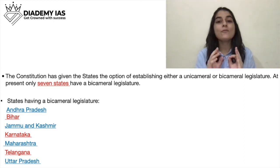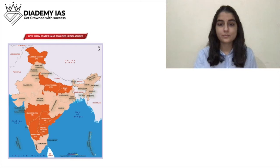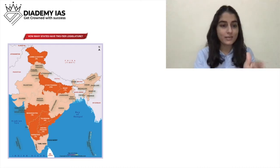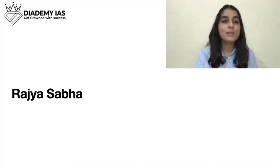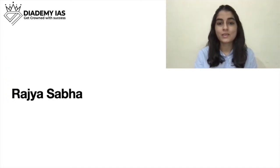These seven states have a bicameral legislature — that means they have two houses: Legislative Assembly as well as a Legislative Council. Here is an image showing in dark orange all the states that have a bicameral legislature. Now first we will be talking about Rajya Sabha. We have already covered that the Indian Parliament is bicameral with two houses — Lok Sabha and Rajya Sabha.